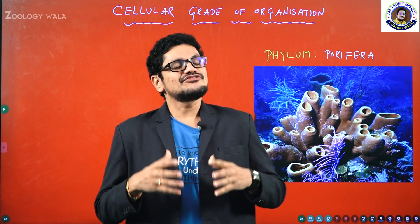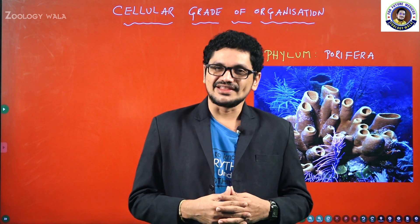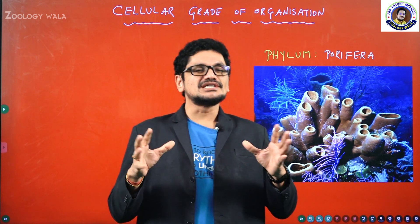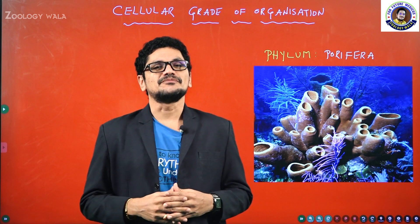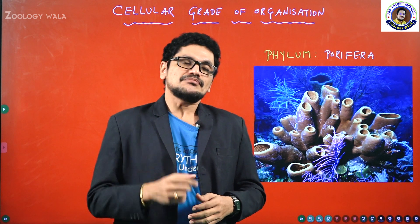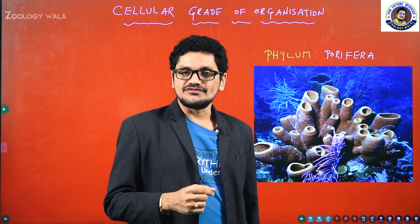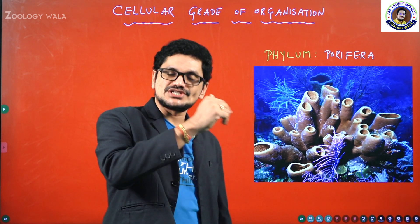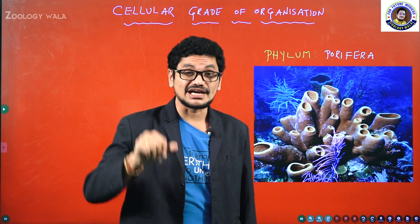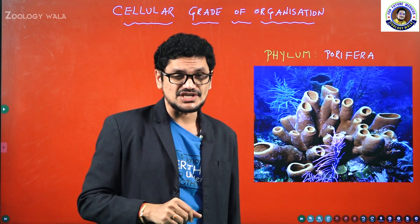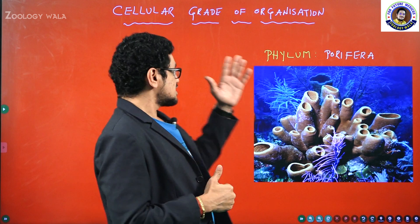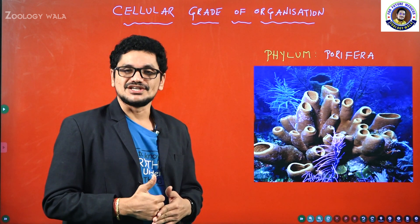There are different levels of organizations in the animal kingdom. As per the CBSE textbook, we have to begin with the cellular level of organization. Just for your information, prior to the cellular level of organization, a protoplasmic level of organization is also seen, though it is not that important. Let us begin with the cellular level of organization.